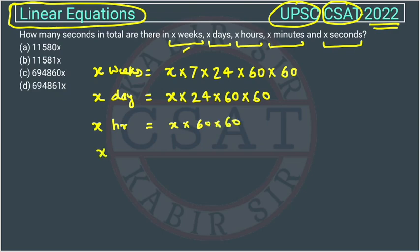Similarly, for x minutes - in x minutes, there will be - per minute, there are 60 seconds. So it also gets converted into seconds. Now x seconds - it will remain as it is x. And we will add them all and this is our answer.